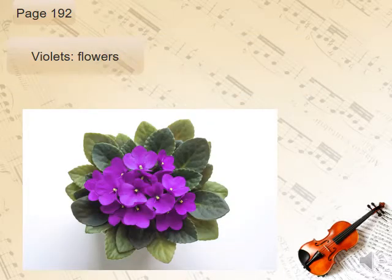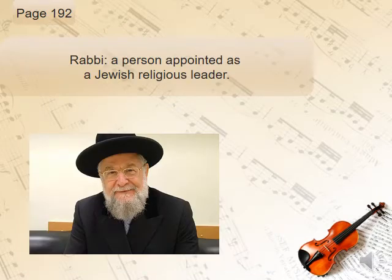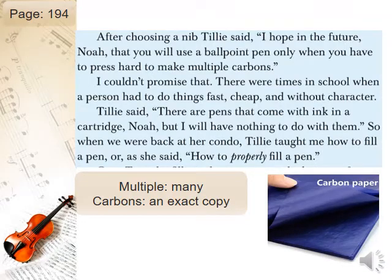These are white or purple flowers — African violets — the flowers mentioned on the page. On the same page we're going to find the word rabbi, which means a person appointed as a Jewish religious leader or a Jewish teacher.